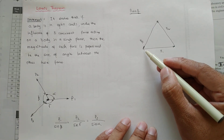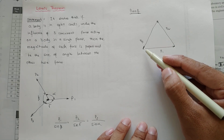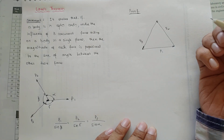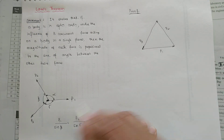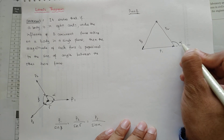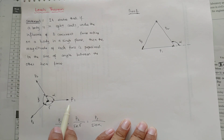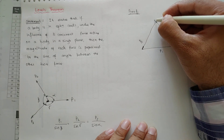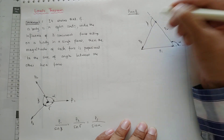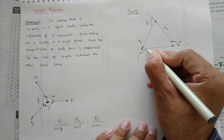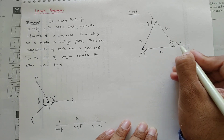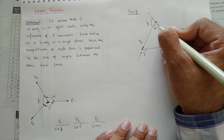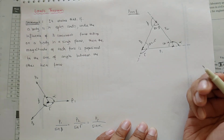Because the body is in equilibrium, the force vectors will join each other to form a closed triangle. If we extend force P1 we get angle alpha, extending P2 gives beta, and extending P3 gives gamma. Since these are on a straight line, the interior angles of the triangle are 180 minus alpha, 180 minus beta, and 180 minus gamma.